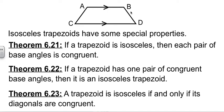And the converse also holds. If you have a pair of congruent base angles, if A is equal to B, or if C and D are equal, then you have an isosceles trapezoid.